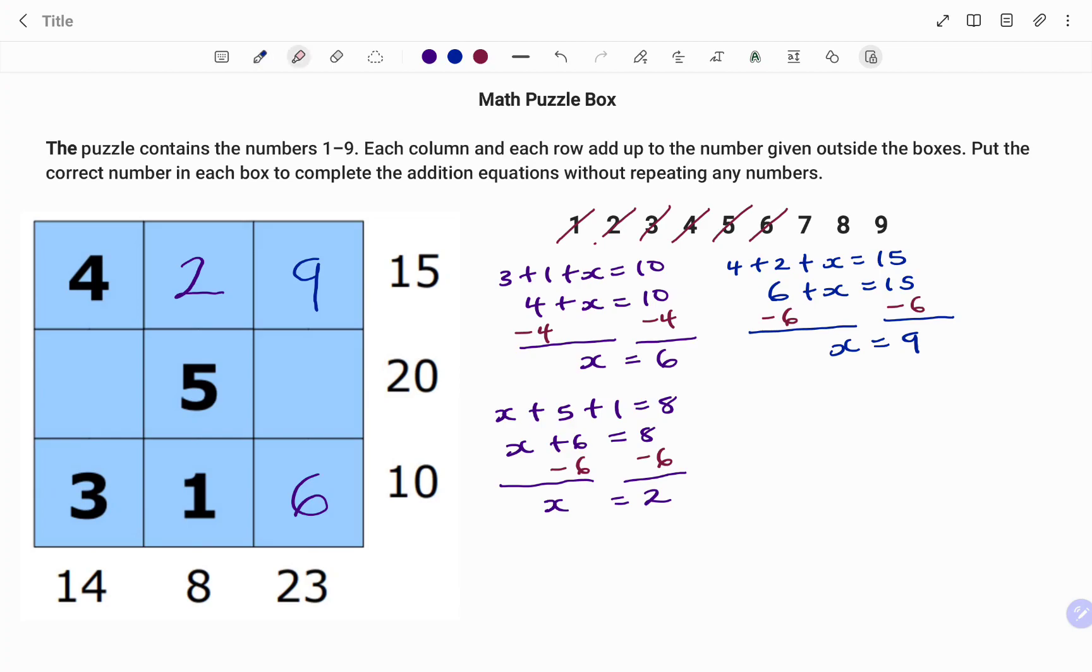Then I can pick another row or column. I'll pick the last column. Nine plus x plus six. I have that as nine plus x plus six is equal to 23. I have x plus 15, that's nine plus six, equals 23. I'm taking out 15 from both sides using the balance method.